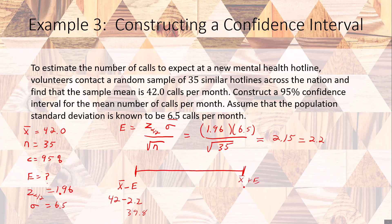The upper bound is going to be X bar plus E, 42 plus 2.2, which will give us 44.2. And there we go, that's the lower bound and that's the upper bound, and that is what we would put into our system.